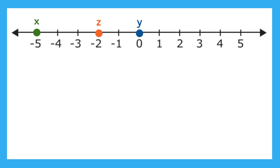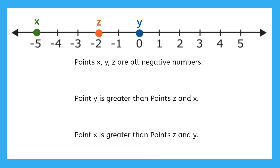Now let's take a look at the points on this number line. Based on the number line, which of these statements are true? The first statement says points x, y, and z are all negative numbers, and that would mean x, y, and z are all less than 0. Are these statements true? Well, let's find out.